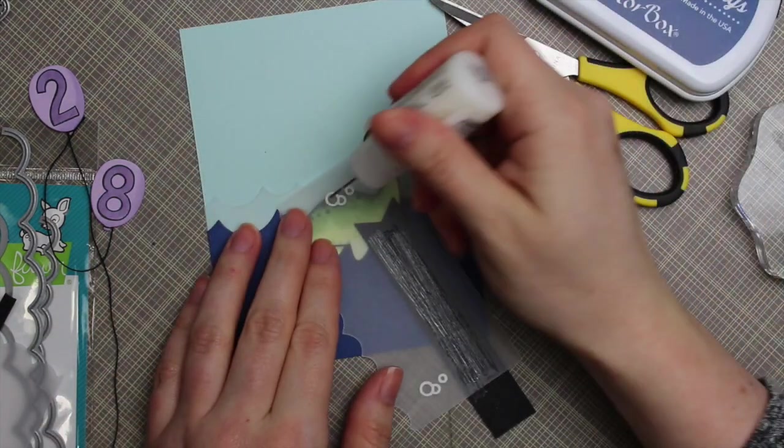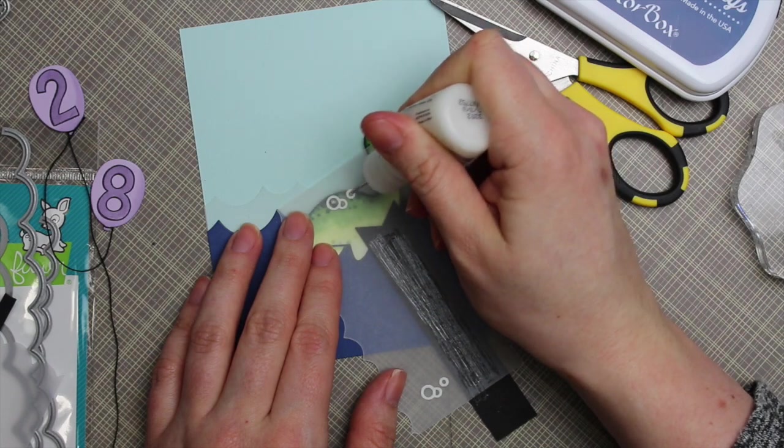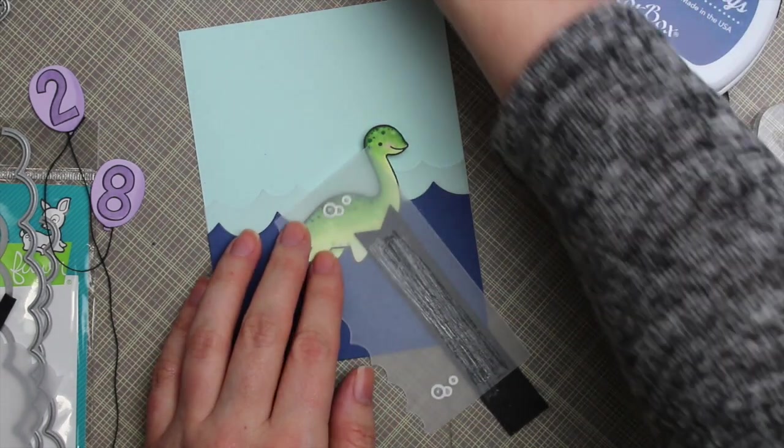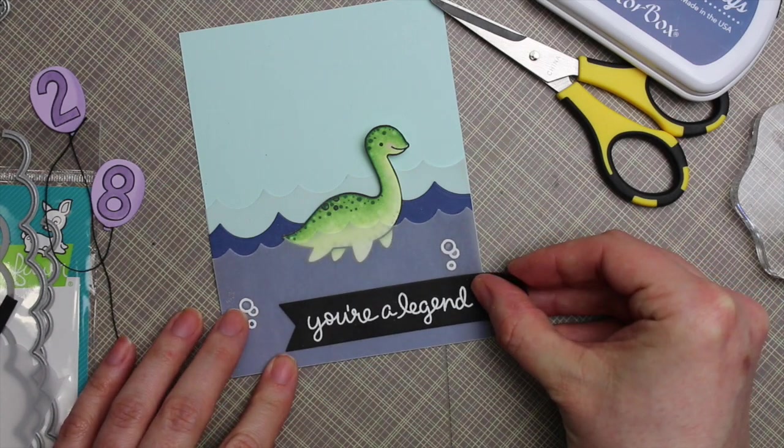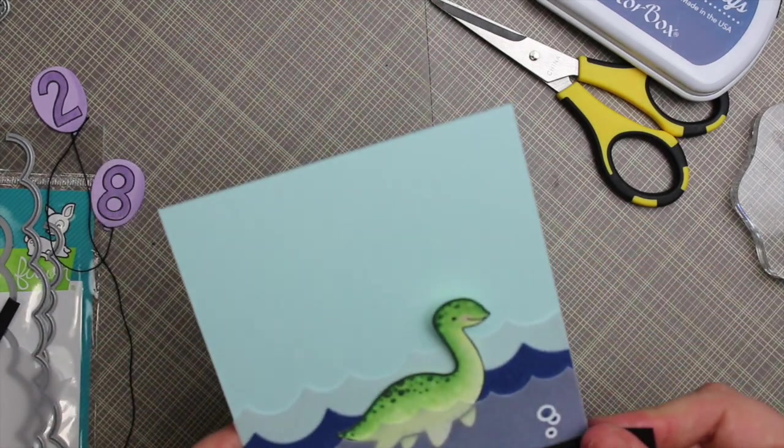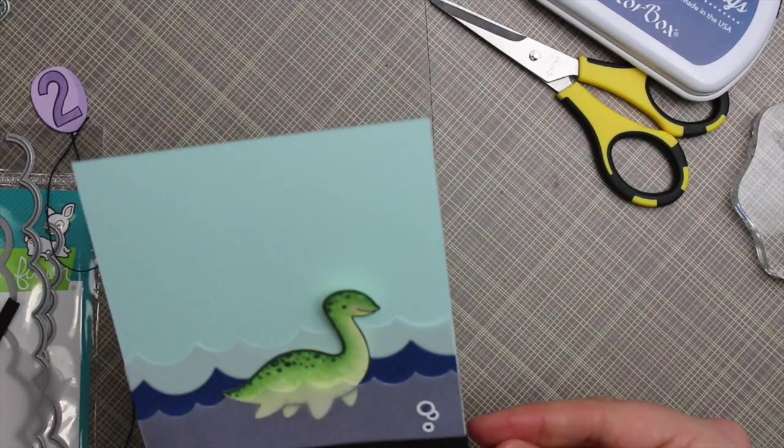And then that was the reason I added those little stamped and embossed bubbles is I added just some multimedia mat adhesive behind them. Because while it shows through, it just works with those bubbles, you can just see it's like a little darker area.